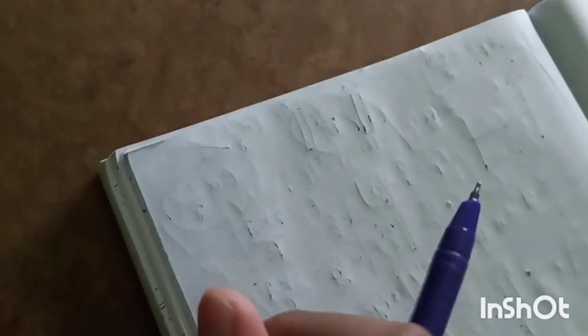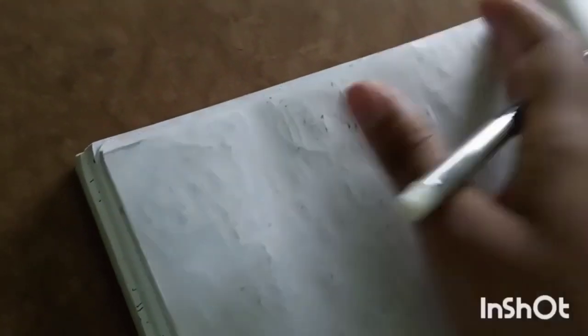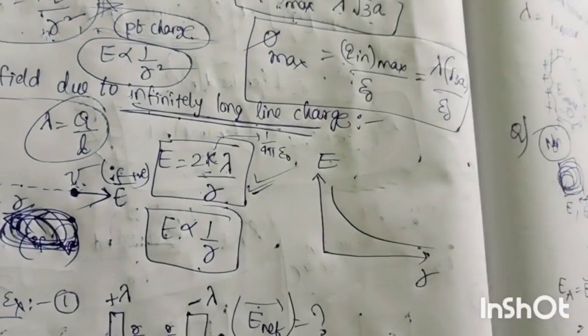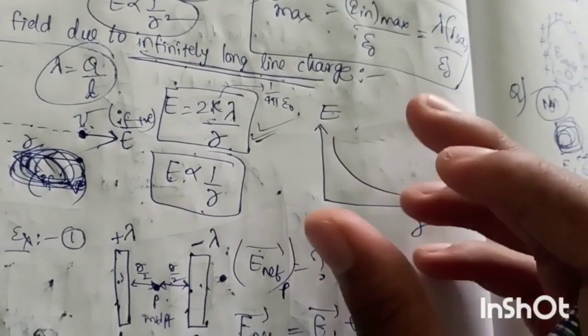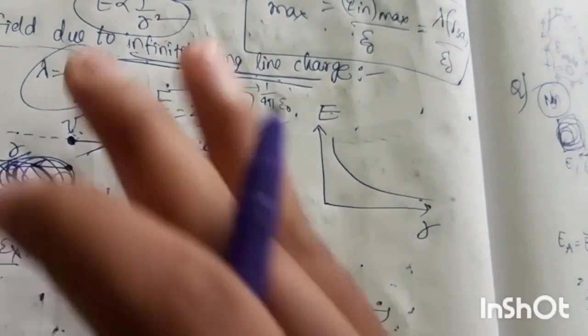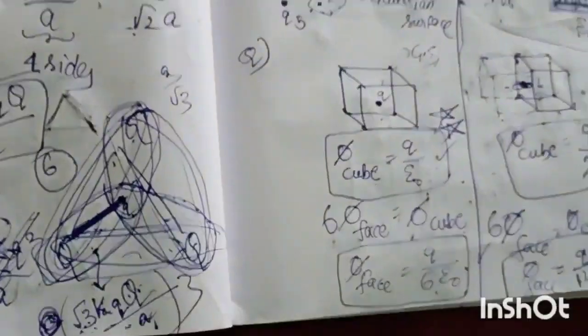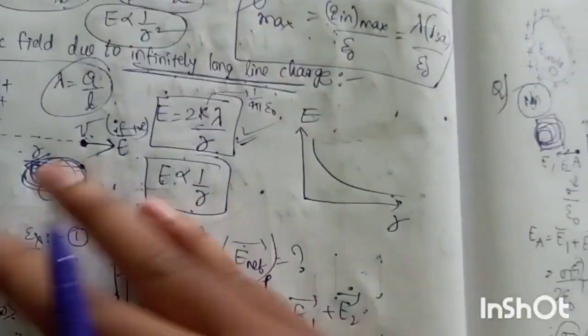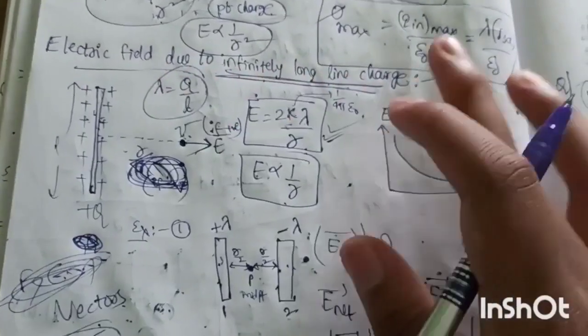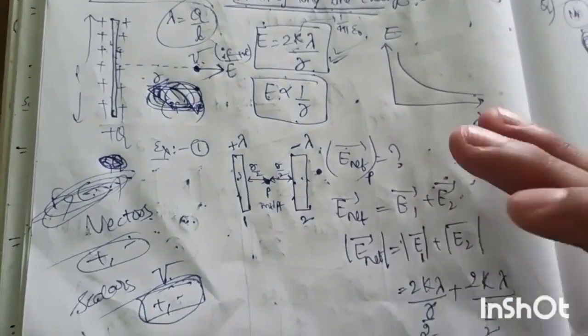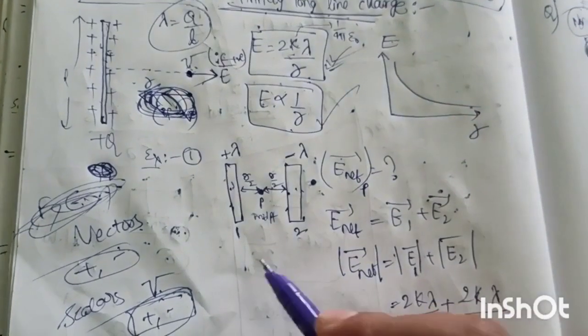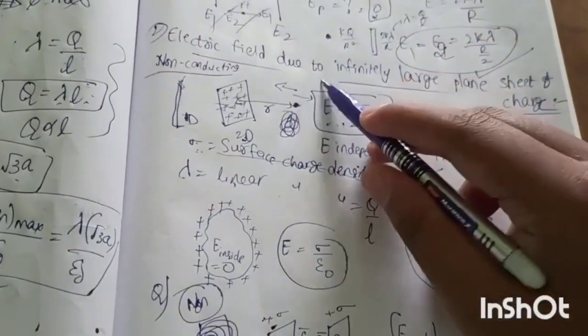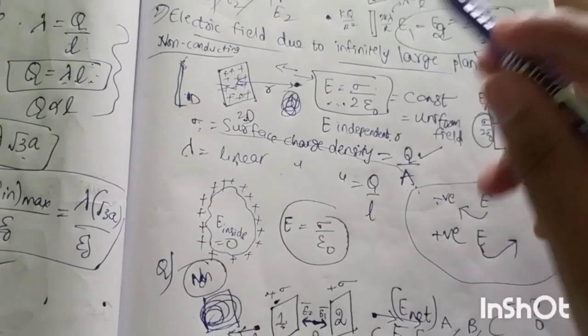We have discussed topics due to hollow sphere and solid sphere. So last class we derived the important formulas and did problems. Now we have to start the electric field due to infinite long line charge, and also discuss the electric field due to infinitely large plane sheet of charge.